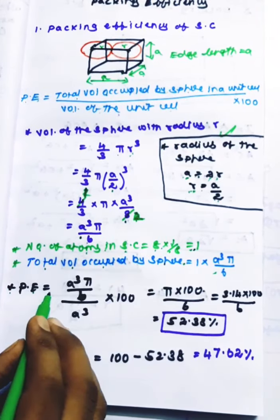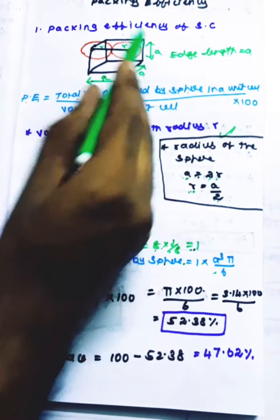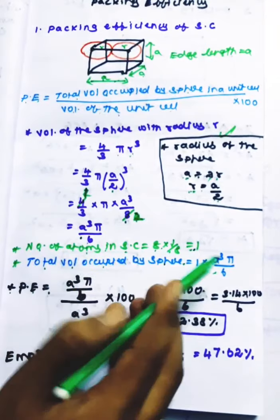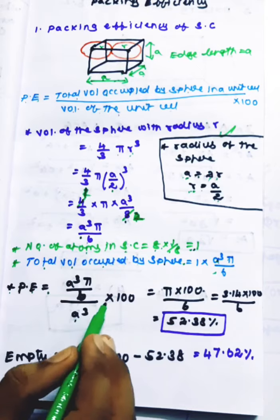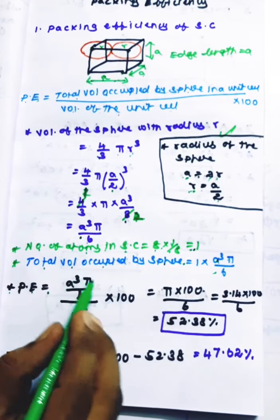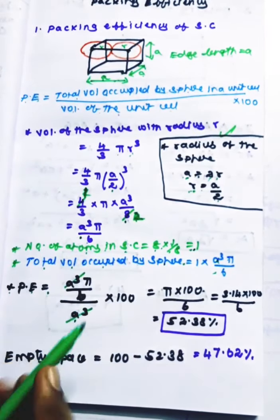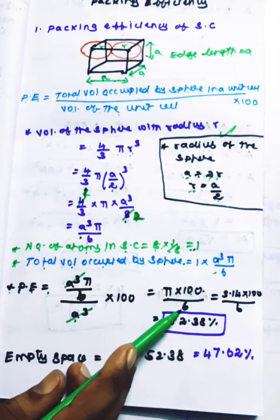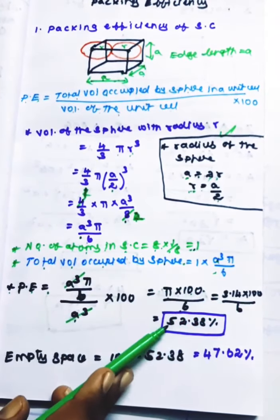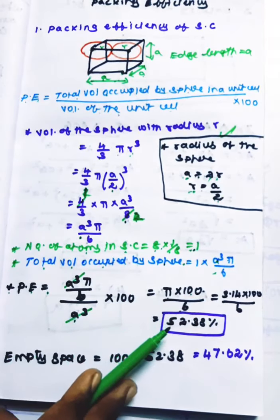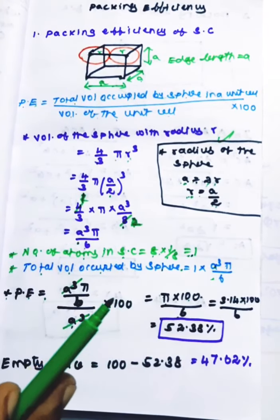For packing efficiency, the volume of the unit cell is a × a × a = a³. So packing efficiency = (π a³ / 6) / a³ × 100. The a³ terms cancel, giving π × 100 / 6. With π = 3.14, we get 52.38%. That is how much of the atoms are packed in the simple cubic.